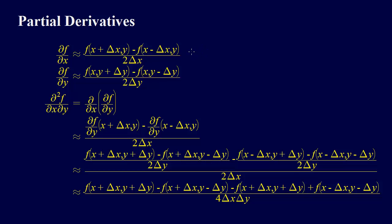So these are the partial derivatives. We can also do mixed partial derivatives. So let's say we're going to do the partial of f with respect to x, and then the mixed partial. You probably know this — we could do the x's first and then the y's, or the y's first and then the x's. It doesn't actually matter. But if we want to go ahead and write this out, we can do this too.